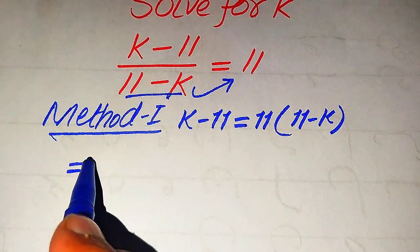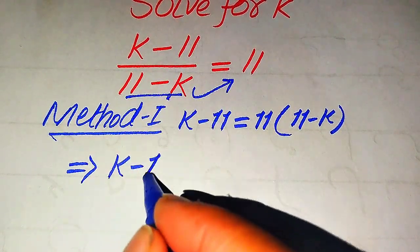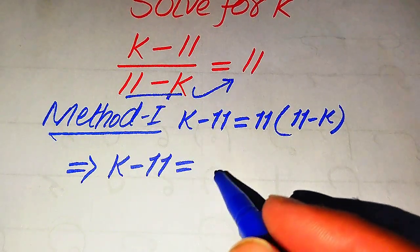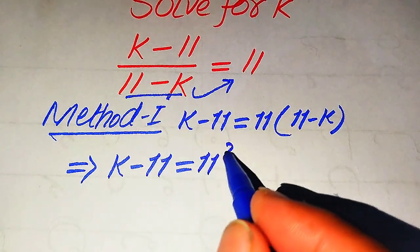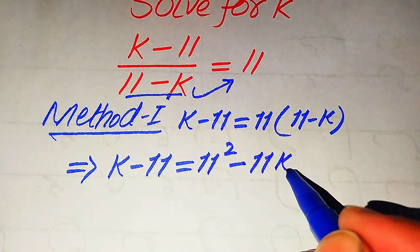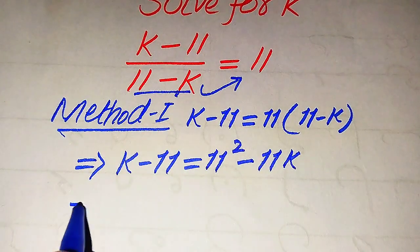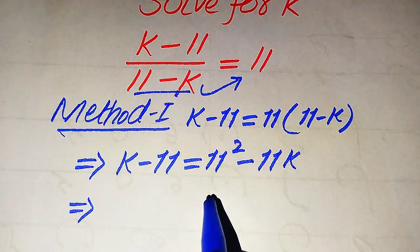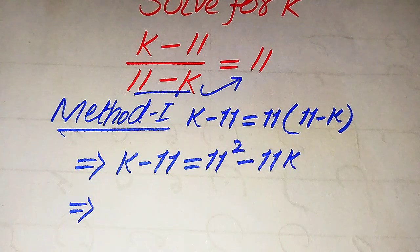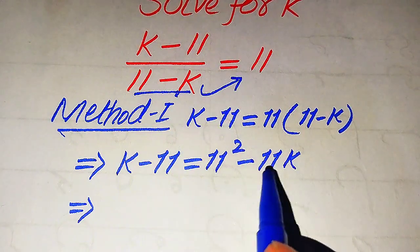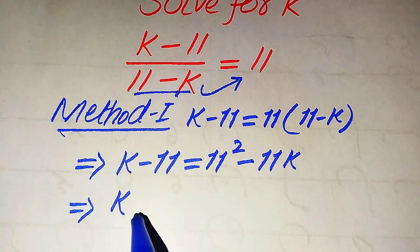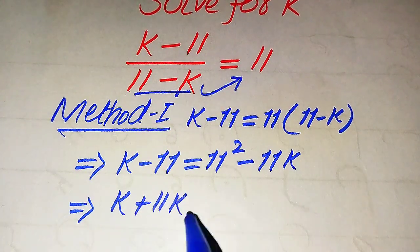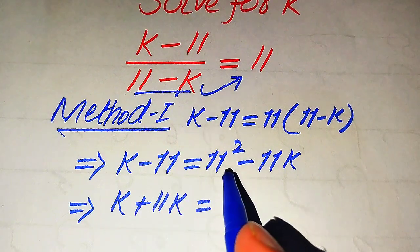In the next step we expand: k minus 11 equals 11 multiplied separately on both terms, giving 11 squared minus 11k. Then we move the variable terms to the left-hand side and constant terms to the right-hand side. So minus 11k moves from the right-hand side to the left-hand side and becomes plus 11k, and minus 11 moves to the right-hand side and becomes plus 11.